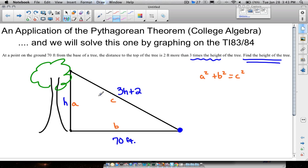So a² that represents h² plus b². B is 70 so we have 70² and this is equal to c². C is the 3h + 2 and squared.